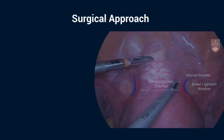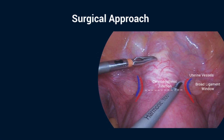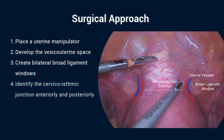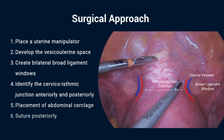Here we present a minimally invasive approach to abdominal cerclage. First, placement of a uterine manipulator when cerclage is placed pre-pregnancy. Next, the vesicouterine space is developed. Third, broad ligament windows are created bilaterally and uterine vessels are identified. The cervico-isthmic junction is then identified. The cerclage is placed medial to the uterine vessels and sutured posteriorly.